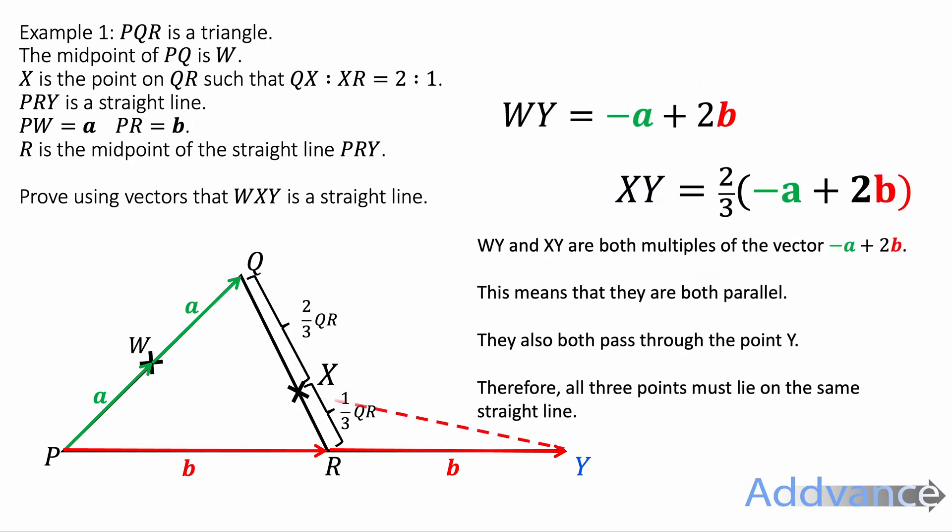So now we've got these two expressions for W to Y and X to Y. They are both multiples of the vector minus a plus 2b. This means they are both parallel. They also both pass through the point Y and therefore because they're both parallel and so they go through the same point, they must lie on the same straight line. And you can see that dotted line here from W to X to Y is written like that. And that's the final answer. We are finished as required.